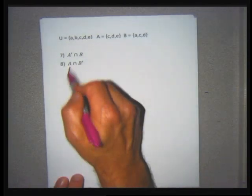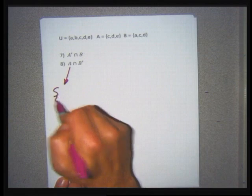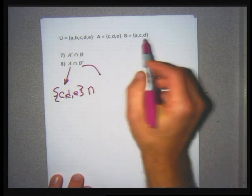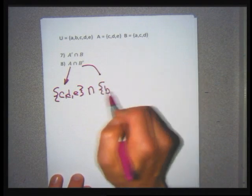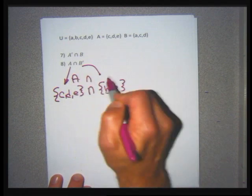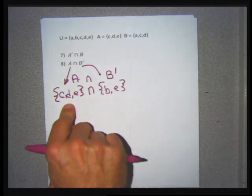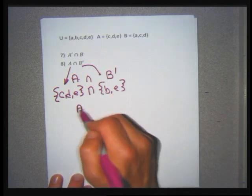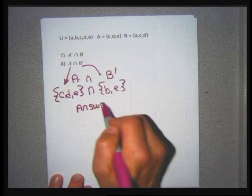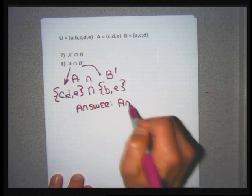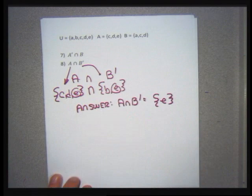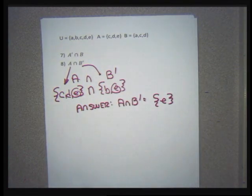Problem eight: A intersection B prime. Set A is {C, D, E} and B prime is {B, E}. Intersection is what they have in common — and they only have E in common. So A intersection B prime equals the set {E}. Intersections are nicer because they get smaller and I can do it in one step.